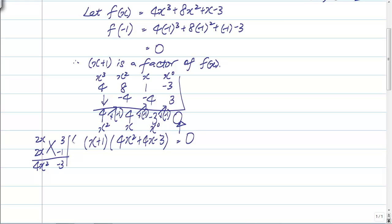This will give me 4x squared, minus 3, 6x, minus 2x, 4x. After I've fully factorized, this is what I have.